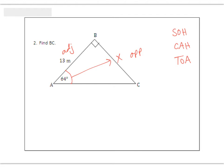Think about SOHCAHTOA — you have to decide which one to use: sine, cosine, or tangent. In this case, we have an O and an A. So you're looking for the trigonometric function that has the O and the A. The O and the A are together with TOA — T stands for tangent. Always after the function, you put the angle. So it's tangent of 64 equals, and then opposite goes on top — which is X — and adjacent goes on bottom, which is 13.